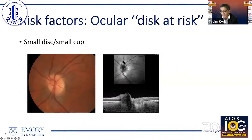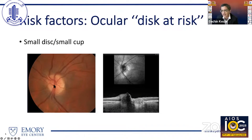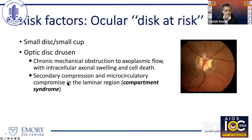When I talk to my patients, I talk about immutable risk factors — things you can't do anything about. Age is a big one. Being born with a small disc and small cup puts you at risk for a tight optic nerve causing ischemia of the optic nerve head. Optic disc drusen also puts you at increased risk, primarily because the tightness of the optic nerve head increases the risk for circulatory insufficiency.